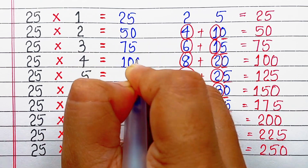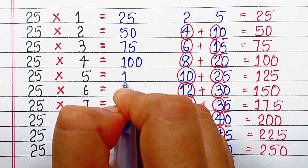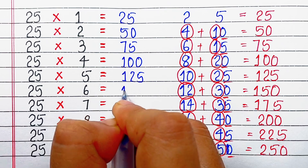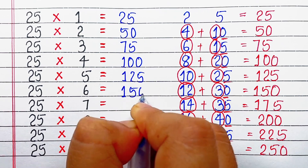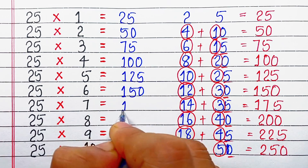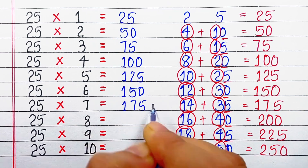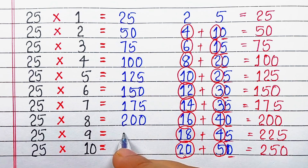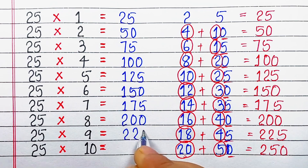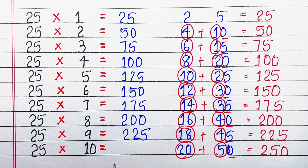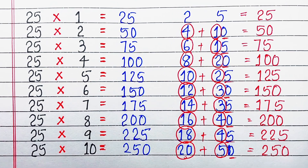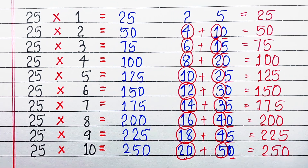So let's start writing: 25 ones are 25, 25 twos are 50, 25 threes are 75, 25 fours are 100, 25 fives are 125, 25 sixes are 150, 25 sevens are 175, 25 eights are 200, 25 nines are 225, 25 tens are 250.